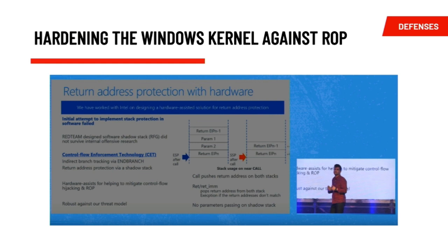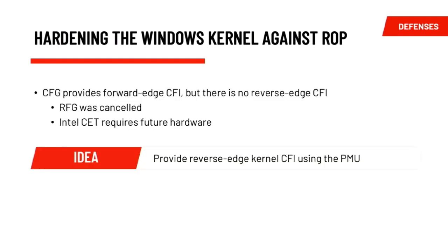Earlier we mentioned that the Windows kernel has a gap in coverage against return flow control hijacks — ROP attacks. Microsoft canceled Return Flow Guard, and their current plan to defend against ROP requires Intel Control Flow Enforcement Technology, or CET, which to our knowledge doesn't exist on any production processor today. When it is released it will only benefit systems running those processors — great for the future, but it doesn't help anybody today. So here we propose a PMU-based protection system.